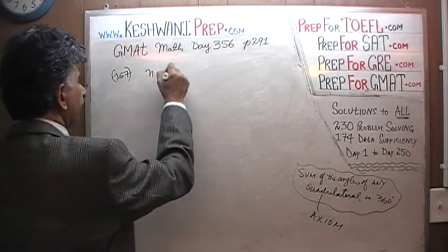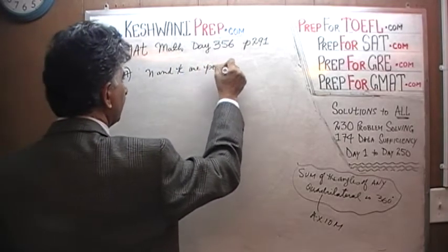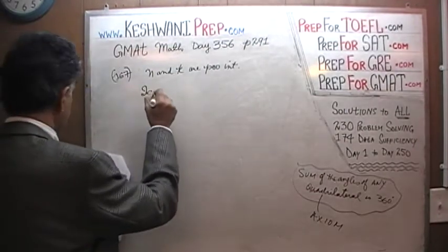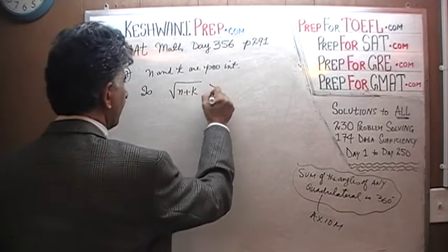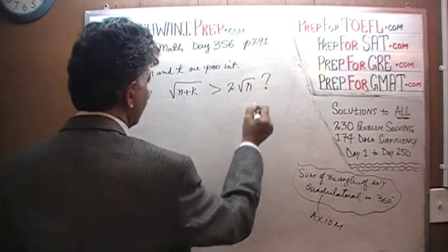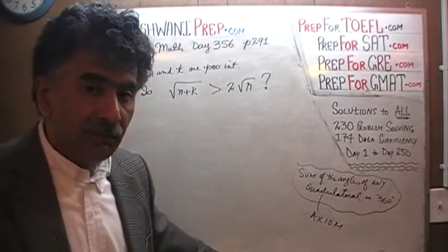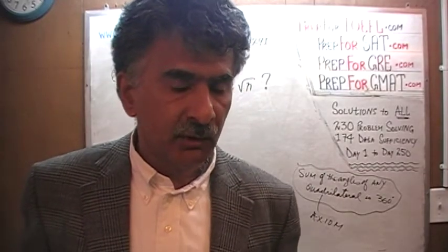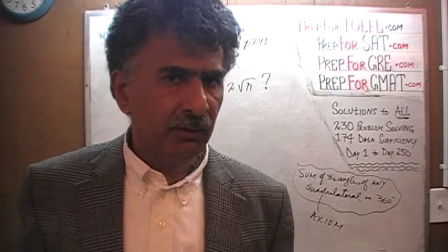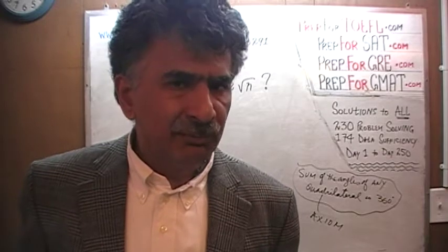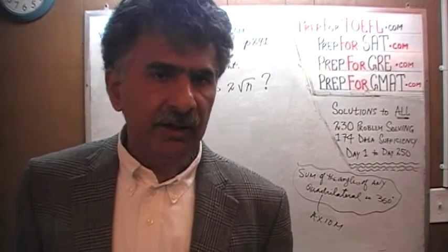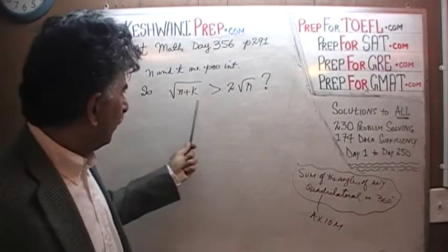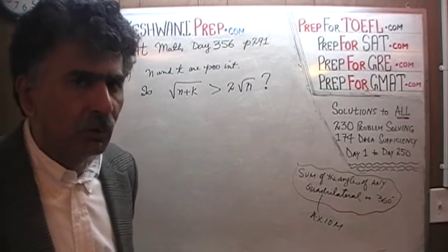Number 167: we are told that n and k are positive integers — they must be whole numbers, they cannot be decimals or negative. The question is: is the square root of (n plus k) greater than 2 times the square root of n? When they give you something convoluted like this, the very first thing you must do is simplify it as much as possible before looking at the two statements.